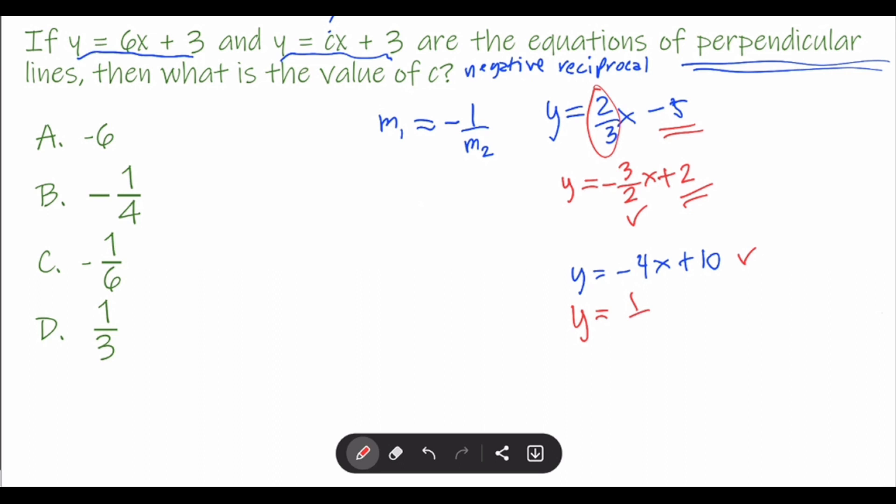The possible equation perpendicular to this is y = ... reverse the 4, which is 1/4, and then the negative of the sign. Negative of negative is positive, so it will be positive 1/4x, and then whatever the y-intercept is—let's say +5. You take the reciprocal, meaning you reverse it, interchange the numerator and denominator, and then the sign changes to its opposite: negative to positive or positive to negative.